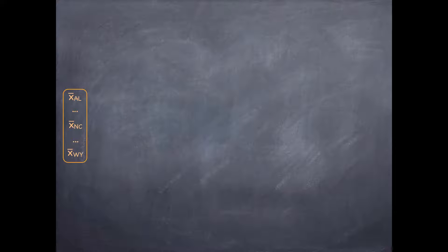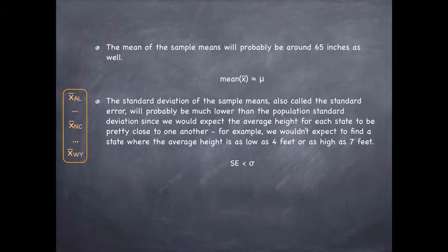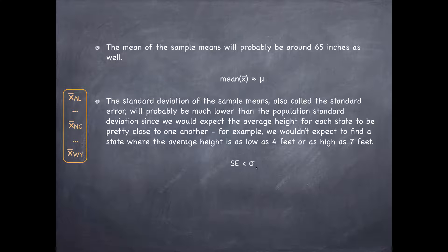Let's look at some of the properties of the sampling distribution. The mean of the sample means will probably be around 65 inches as well, because we wouldn't expect too many states to yield a sample average that is too far off from the population mean. The standard deviation of the sample means — also called the standard error — will probably be much lower than the population standard deviation, since we would expect the average height for each state to be pretty close to one another. We wouldn't expect to find a state where the average height is as low as 4 feet or as high as 7 feet. So the variability of the sample means is going to be lower than the variability in the actual population.